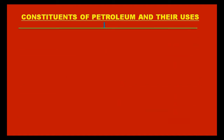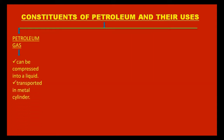Petroleum gas can be compressed into a liquid called LPG — liquefied petroleum gas — and transported in metal cylinders, giving a portable fuel supply in homes and industries. It is also used in the production of carbon black.